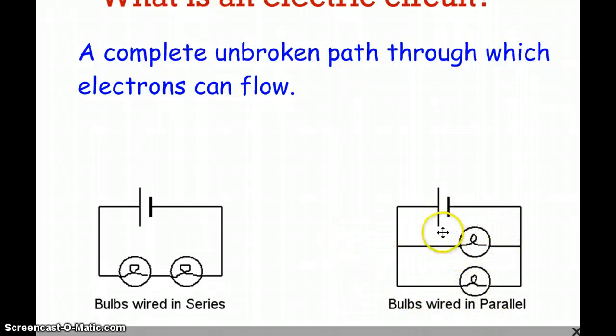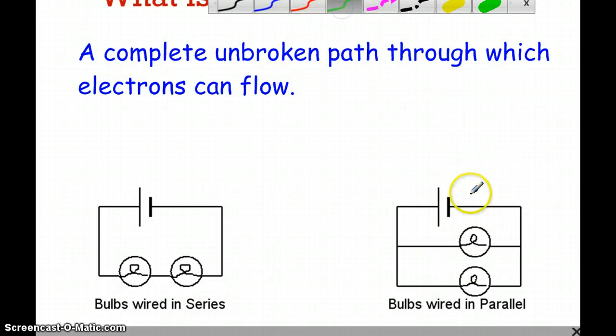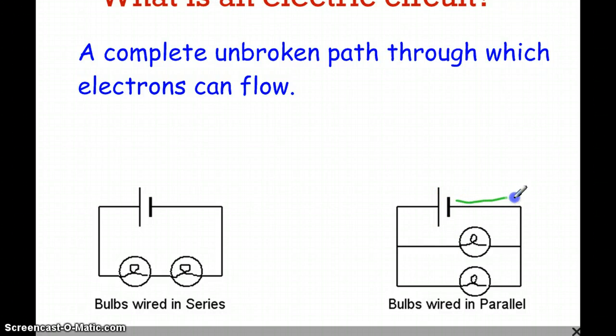There's a complete unbroken path. This symbol represents a battery. These two symbols represent light bulbs. Complete unbroken path through which the electricity can flow. There's no break in this path, and so the electricity can flow through the entire thing. If there was a break, it wouldn't be an electric circuit. Electricity wouldn't work.